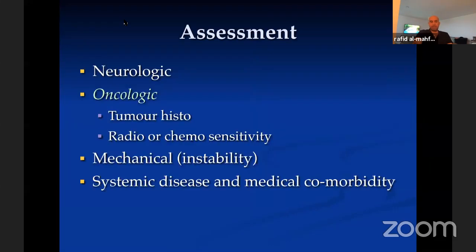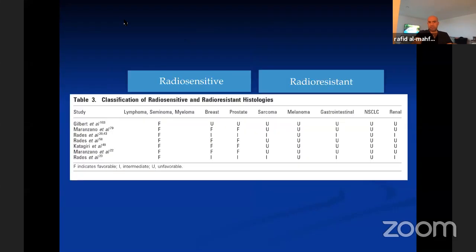The second assessment is oncologic — tumor histology. For this patient, we knew it was renal cell cancer, which is generally not as responsive to radiation treatment as others. Hematological malignancies like lymphoma and myeloma are very radiosensitive — for those tumors, we concentrate more on radiation treatment. When you have radioresistant tumors, we think more about surgery.